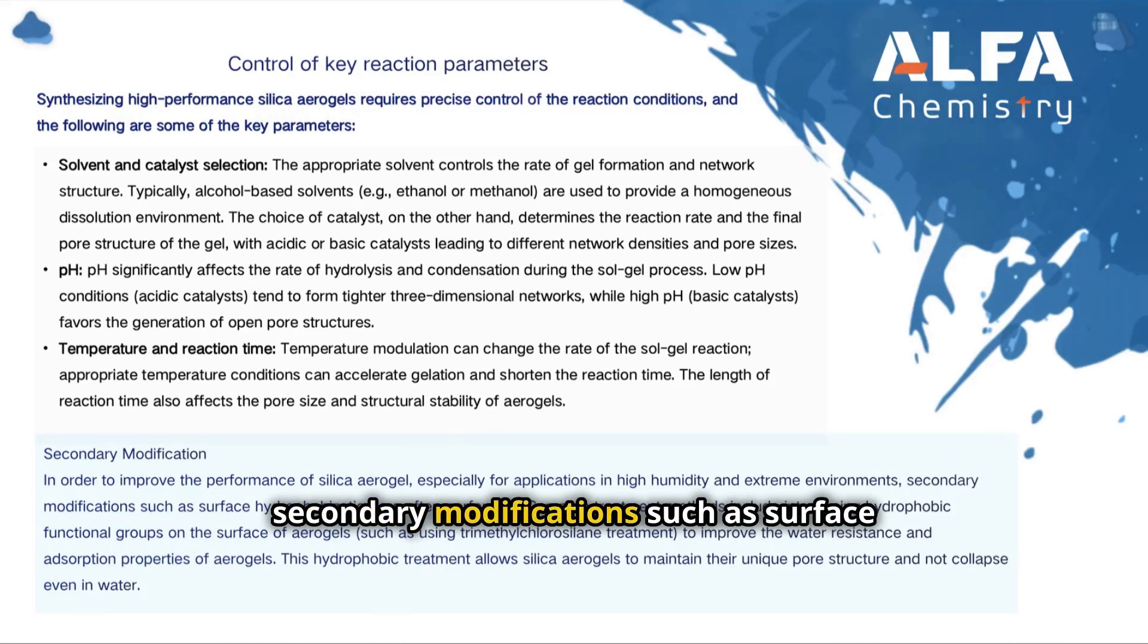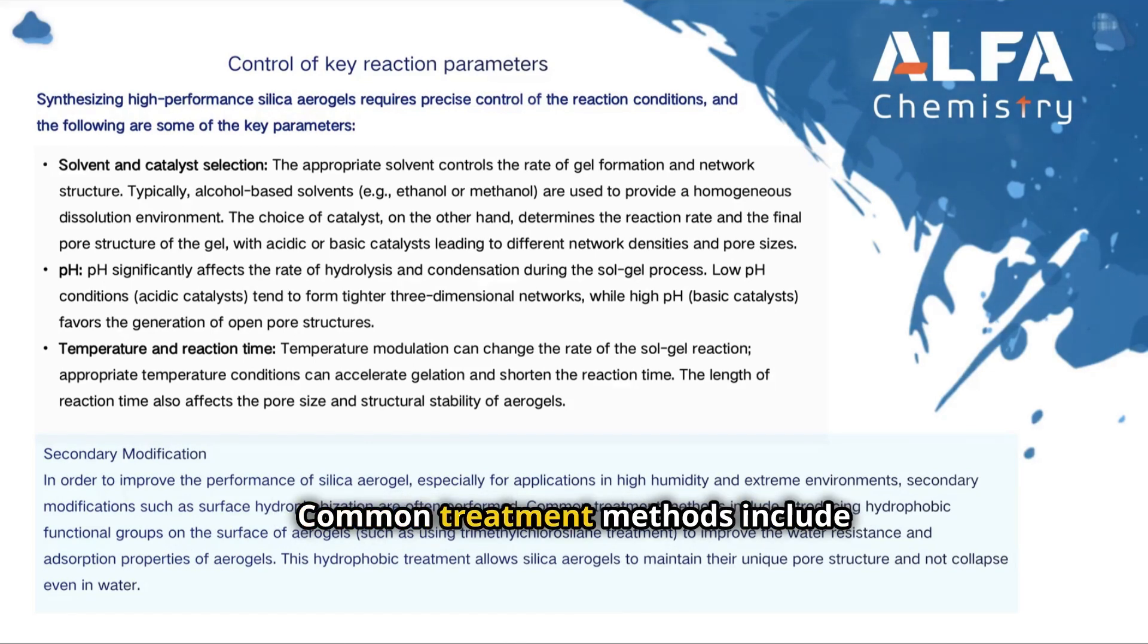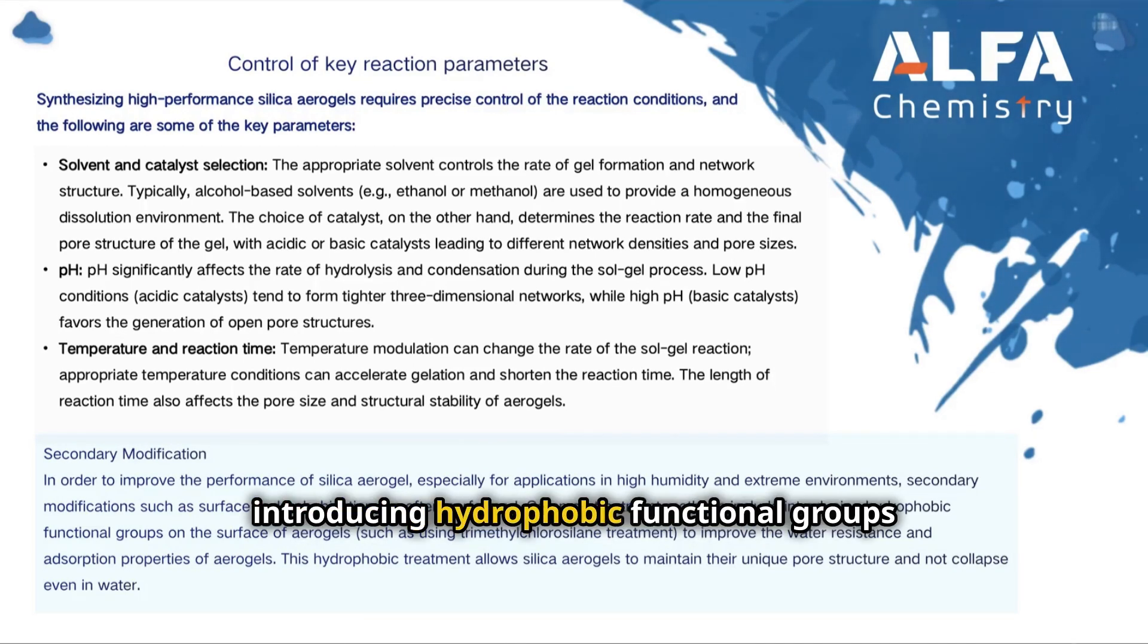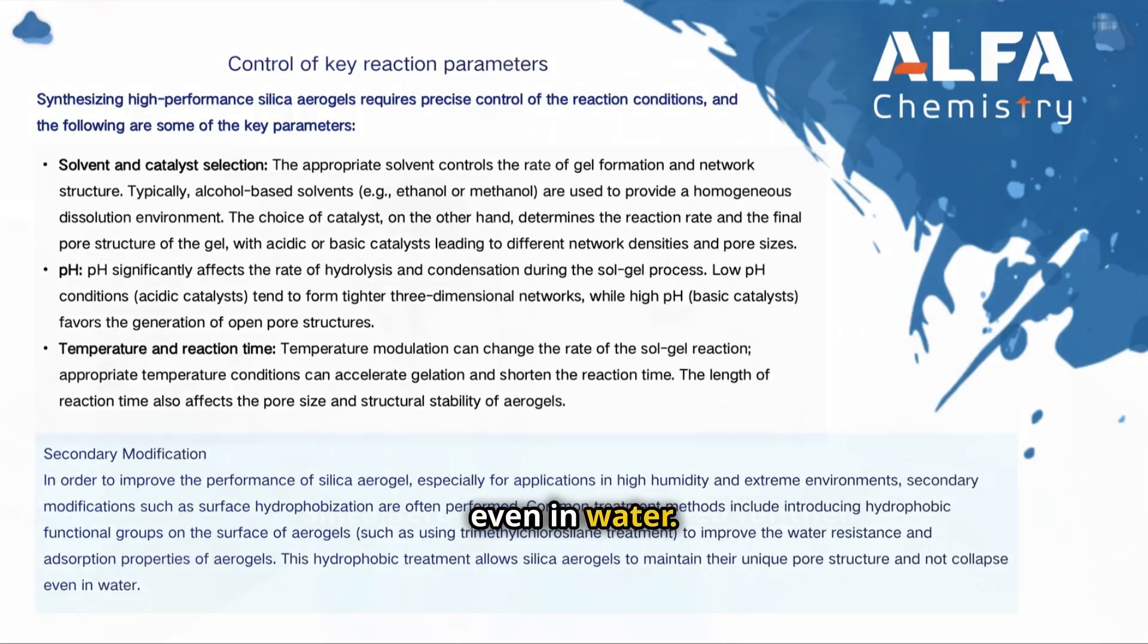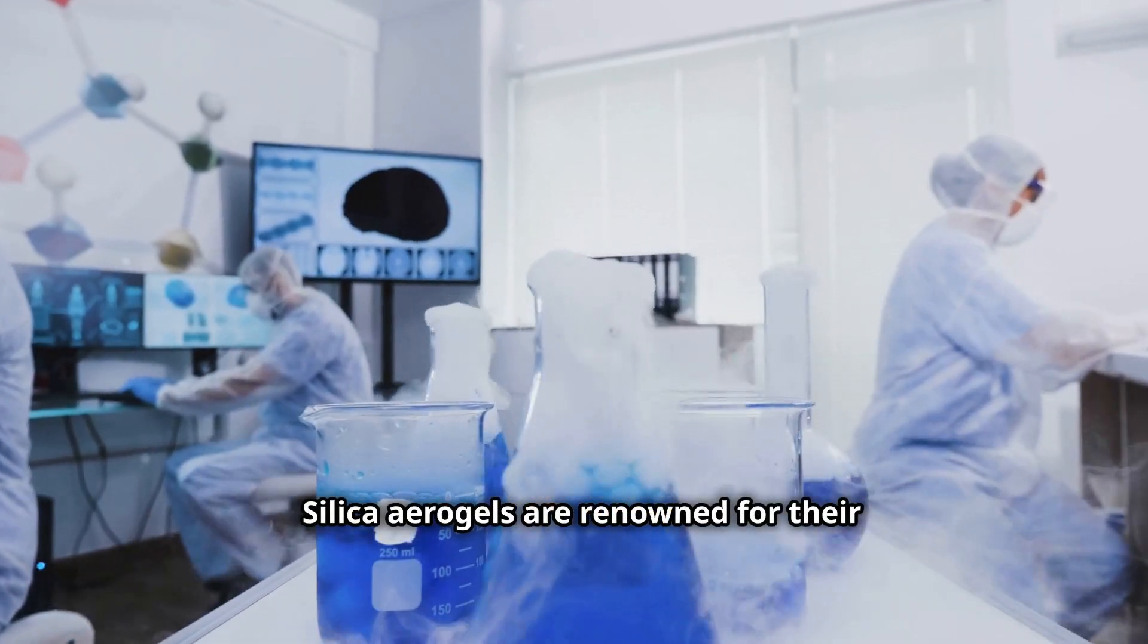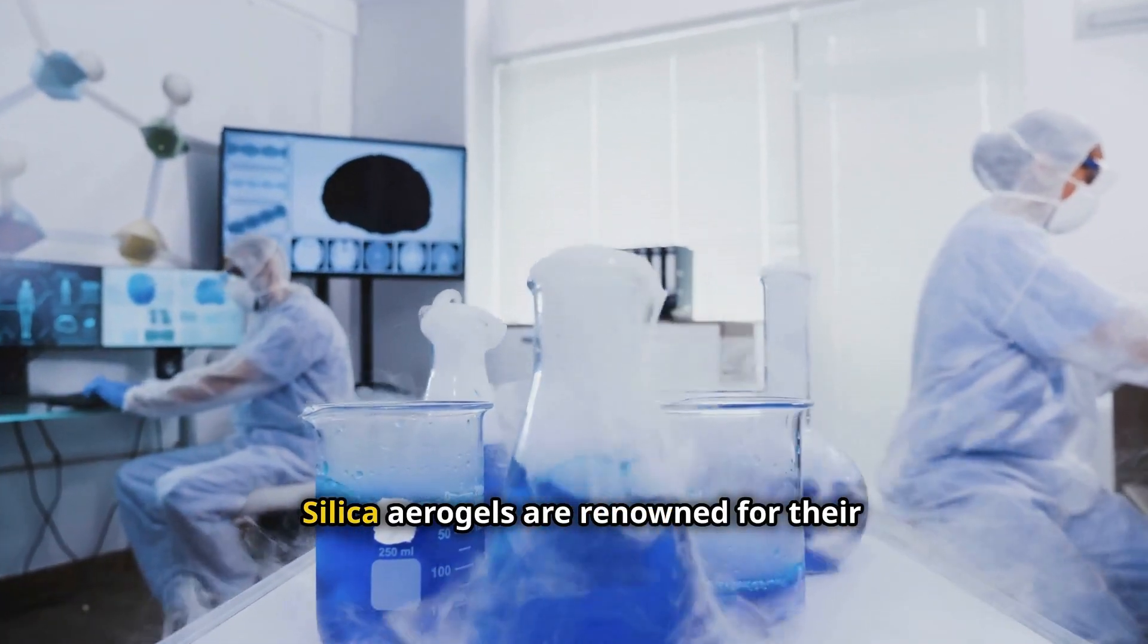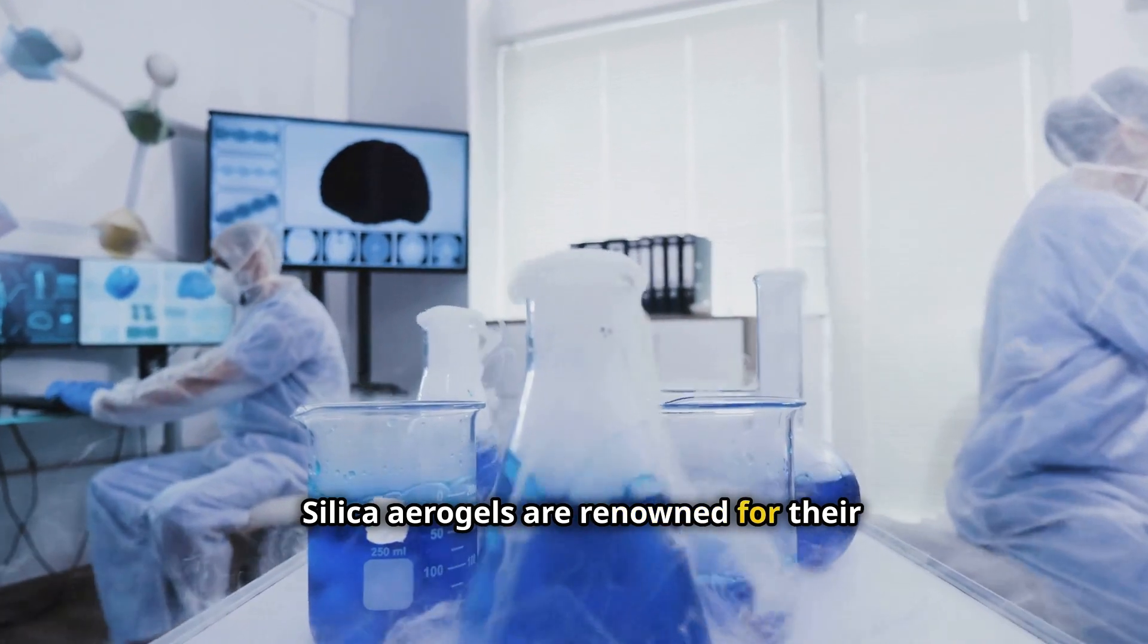In order to improve the performance of silica aerogels, especially for applications in high humidity and extreme environments, secondary modifications such as surface hydrophobization are often performed. Common treatment methods include introducing hydrophobic functional groups on the surface of aerogels to improve the water resistance and adsorption properties. This hydrophobic treatment allows the silica aerogel to maintain its unique pore structure and prevent it from collapsing even in water.